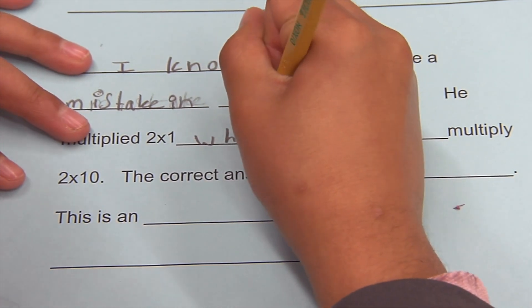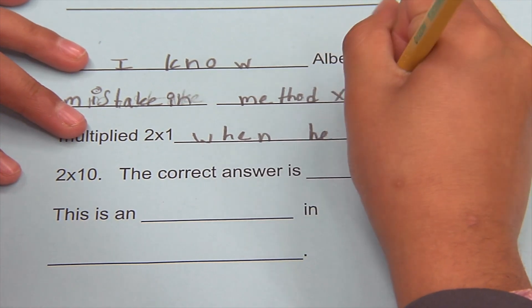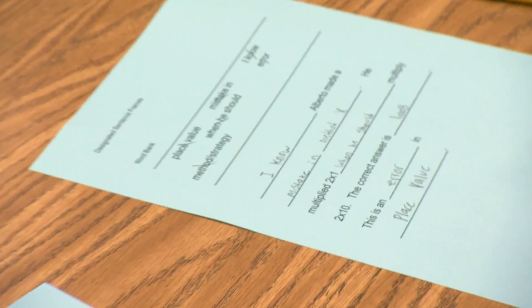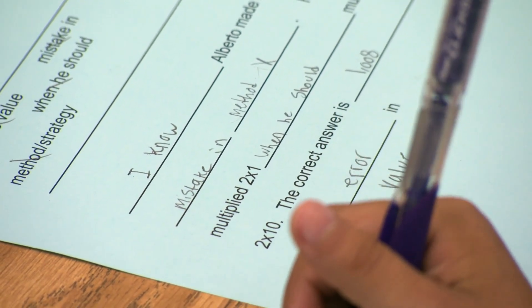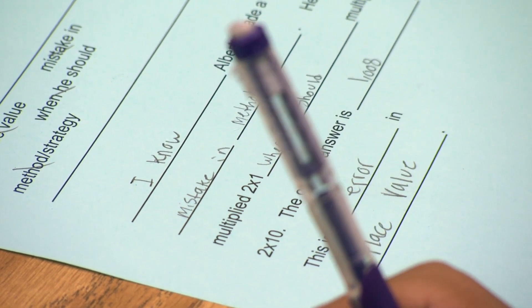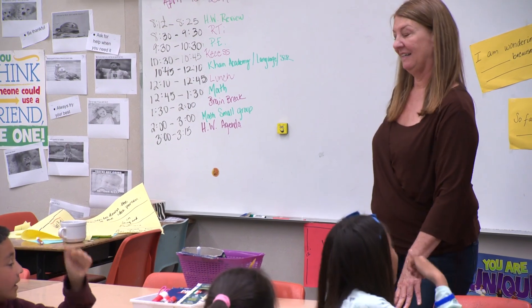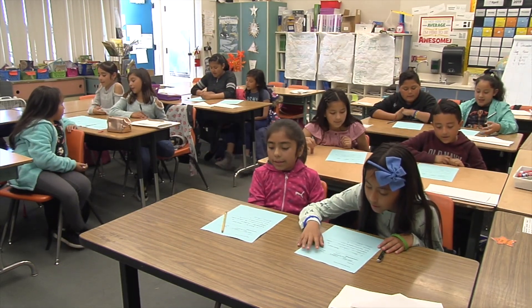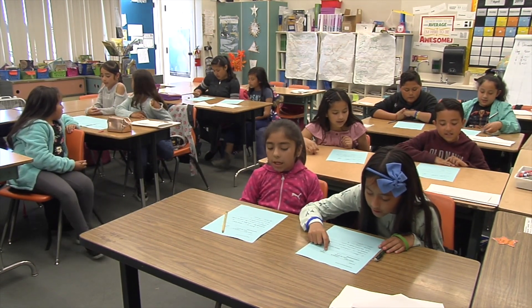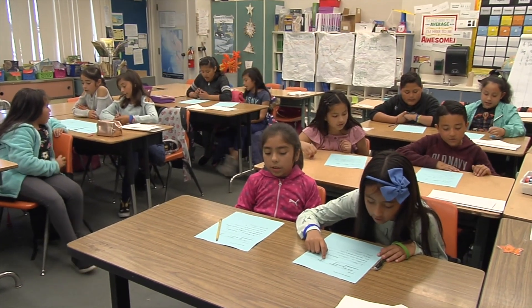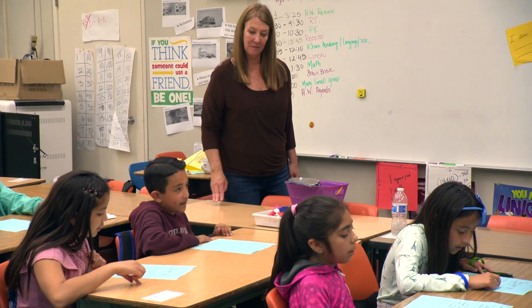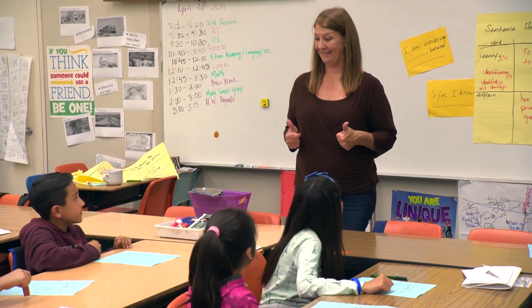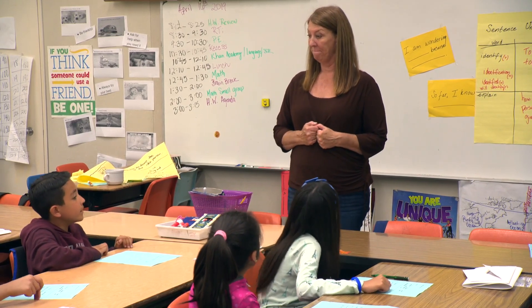So I think right here it will go — in order to make a mistake in a method. He showed up and he should have multiplied two times ten. Are we ready? Yes! Let's read what we wrote. Alberto made a mistake — he multiplied two times one — the correct answer is — this is an error in... So we all agree, awesome, nice. So when we go back to our groups, will you be able to help them? Yes. Great.